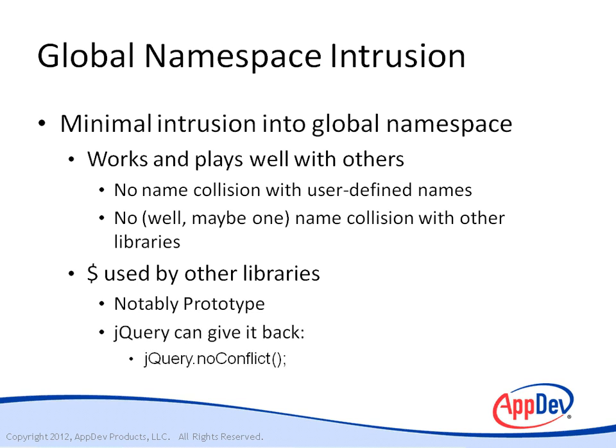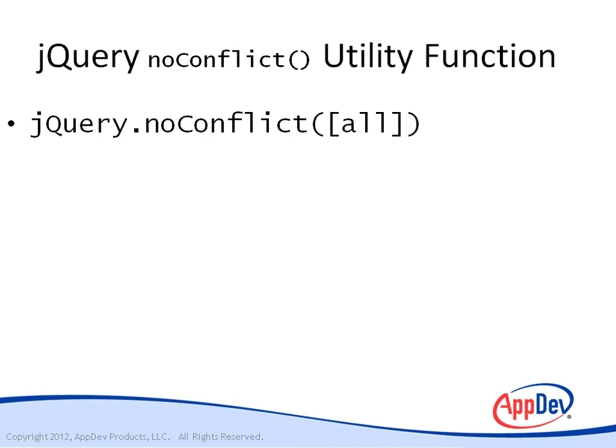The one problem is that other libraries — most notably Prototype — also use the dollar sign as a name. Rather than trying to lock out other libraries, jQuery takes the exact opposite approach: it provides a supported means to give up the dollar sign name to any library that would like to use it. This is done through a utility function named 'noConflict.'